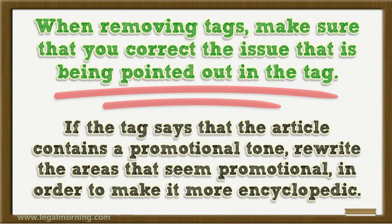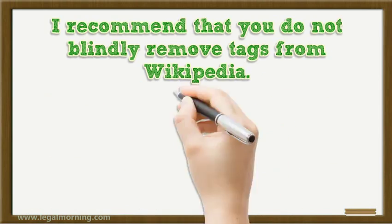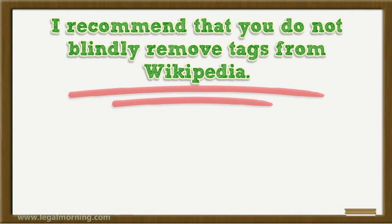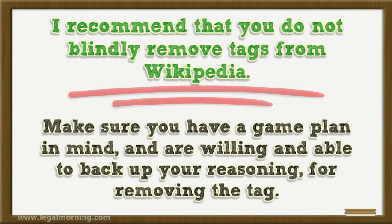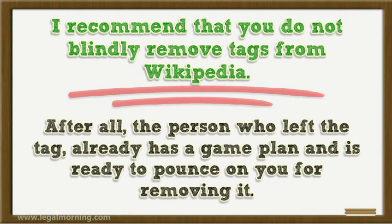If the tag says that the article contains a promotional tone, rewrite the areas that seem promotional in order to make it more encyclopedic. I recommend that you do not blindly remove tags from Wikipedia. Make sure you have a game plan in mind and are willing and able to back up your reasoning for removing the tag. After all, the person who left the tag already has a game plan and is ready to pounce on you for removing it.